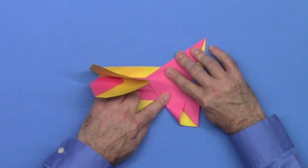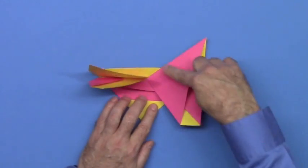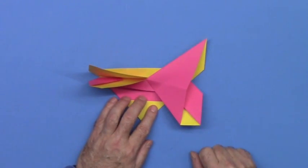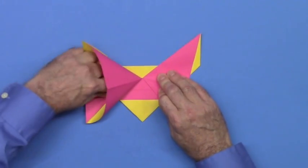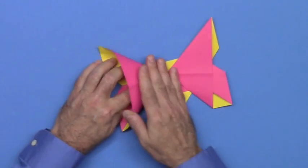Once that's flattened, I can flatten the rest of the shape. And here we have the outline of one of the wings. Let's squash fold the other half. Make sure you open all the way to the center line of the paper.